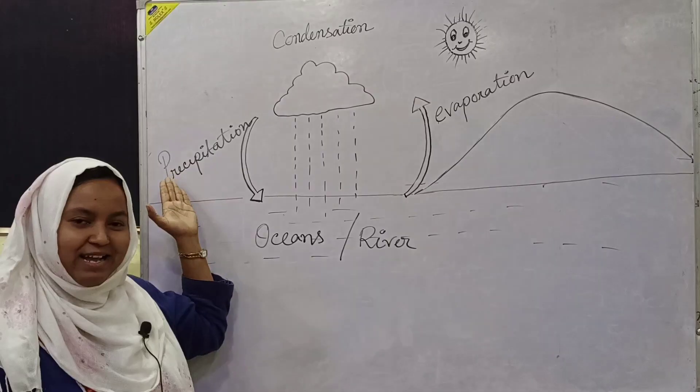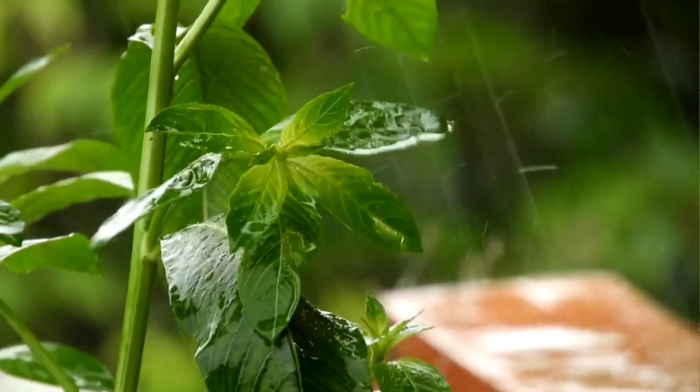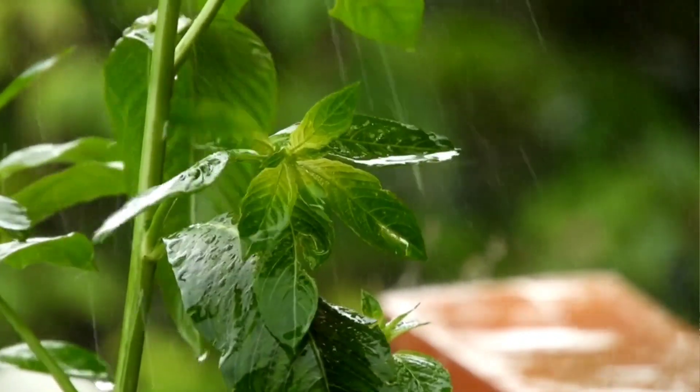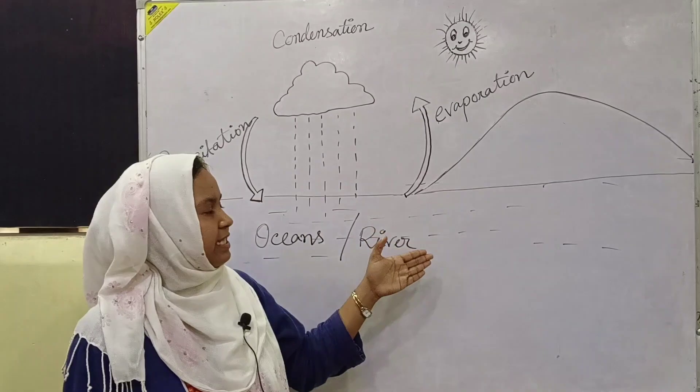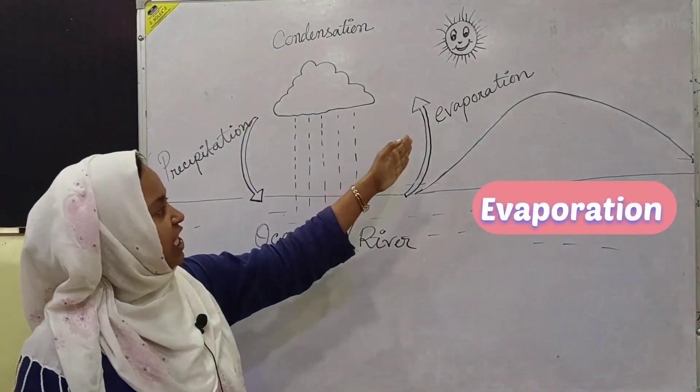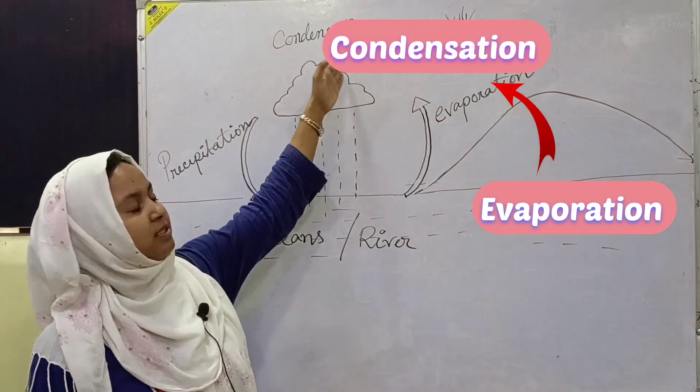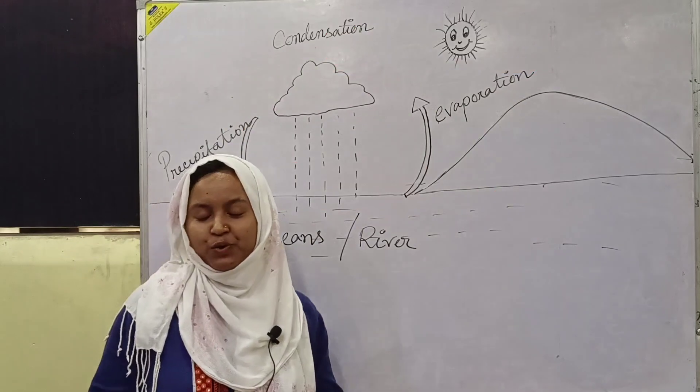This process is known as precipitation. After raining, water droplets again collect to the oceans or rivers. Now you can see that the water cycle is a continuous process of evaporation, condensation, and precipitation.